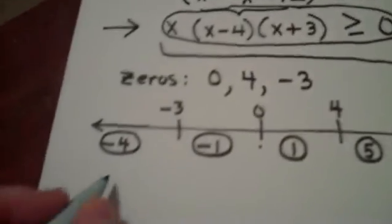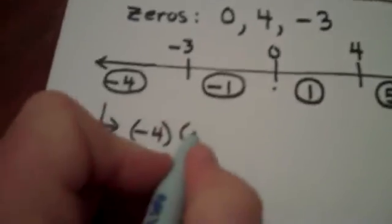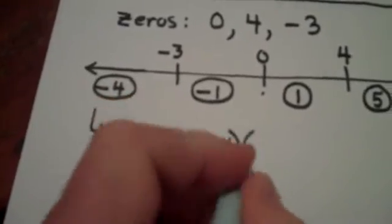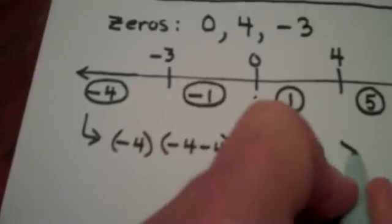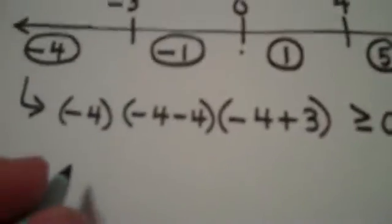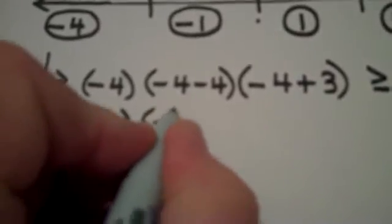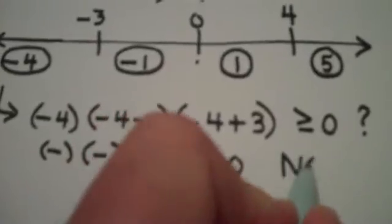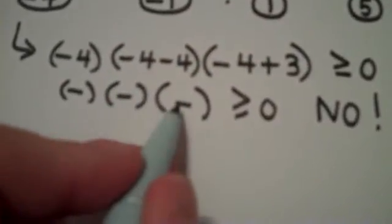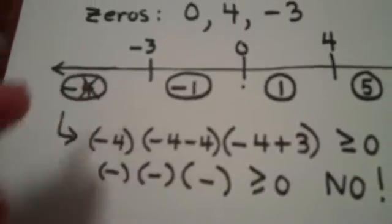Let's start with negative four. Let's see what happens here. This would become negative four times negative four minus four times negative four plus three. And it's supposed to be greater than or equal to zero. Now, all we really need to do here is to test the signs. We don't really need the value. So we have a negative times a negative times a negative. You see how I'm just working with the signs? Negative times negative times negative is greater than or equal to zero. Now, because negative times negative is a positive times negative is a negative and a negative number is not greater than or equal to zero. So that means this number does not work which means the numbers in this region are not solutions.